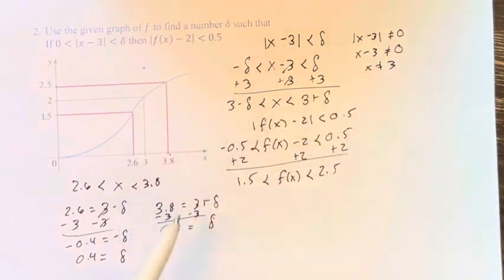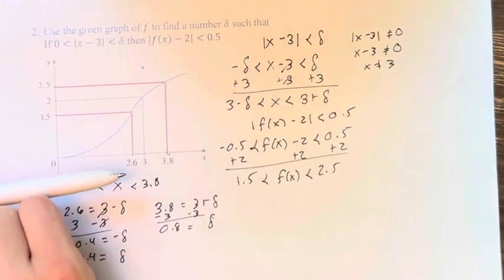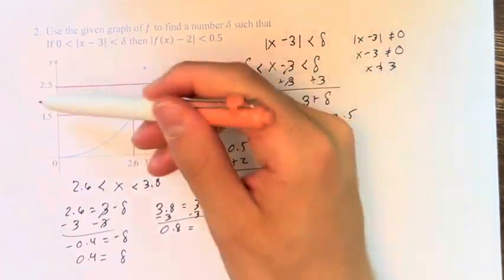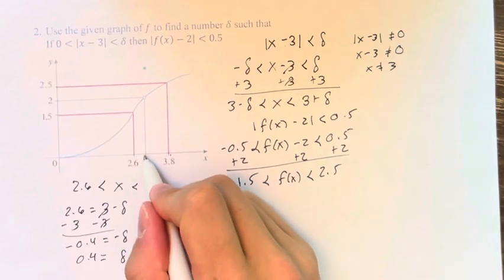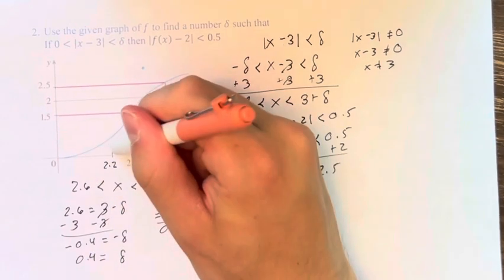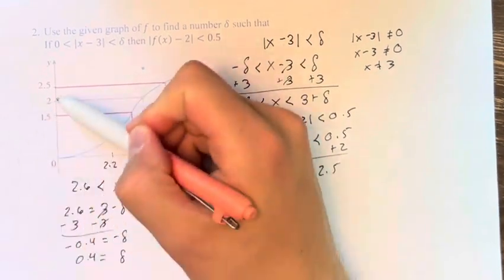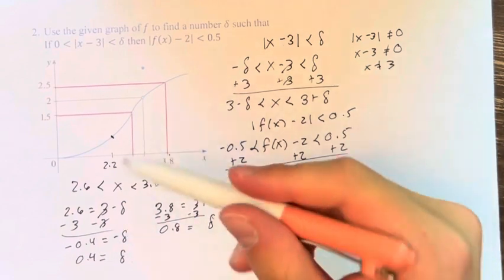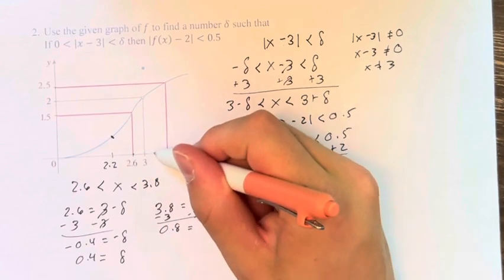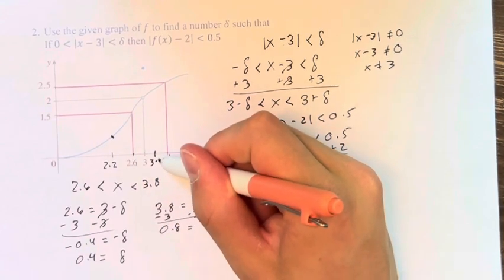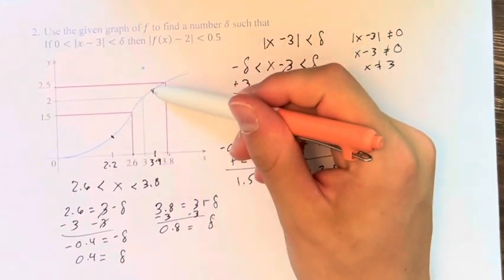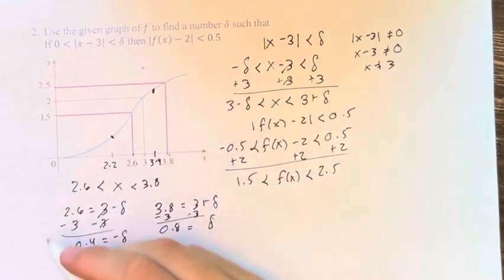Because if we choose 0.8, yes, it's true that if we don't go more than 0.8 in this direction, we'll stay within this range of y values. However, if we subtract 0.8, we go in this direction, right? That's 2.2. That is going to correspond with a y value that is outside of the range that we're looking at. Meanwhile, if we're going 0.4 in this direction, we're okay. But also, if we go to 0.4 in the positive direction to 3.4, because this is the more restrictive value, it is within the range as well. Therefore, our delta is 0.4.